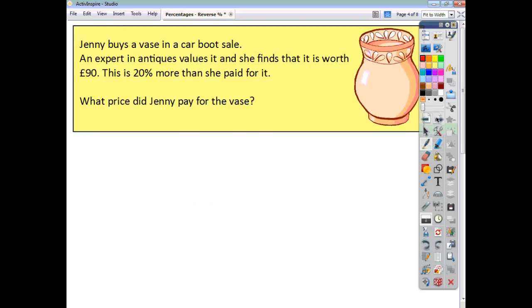Let's have a look at a third question. Jenny buys a vase in a car boot sale. An antiques expert values it and she finds that it's worth £90. Then you're told that this is 20% more than she paid for it. So what price did Jenny pay for the vase? So there you have the current valuation, you have information on a percentage increase, and you're asked to go back in time and find the value of the vase.